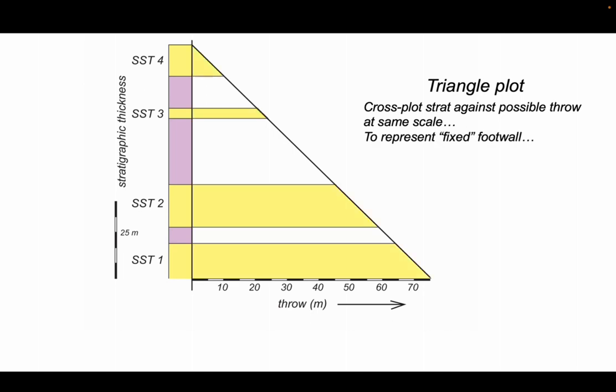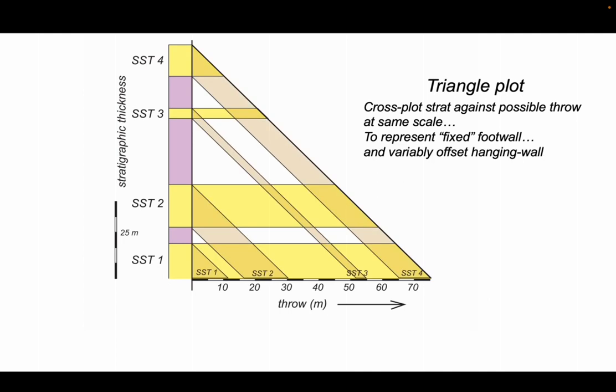Let's start by putting in the fixed footwall across like this. And now we can cross-plot the offsets of these formations with throw like this. And these represent variably offset hanging walls, if you will.